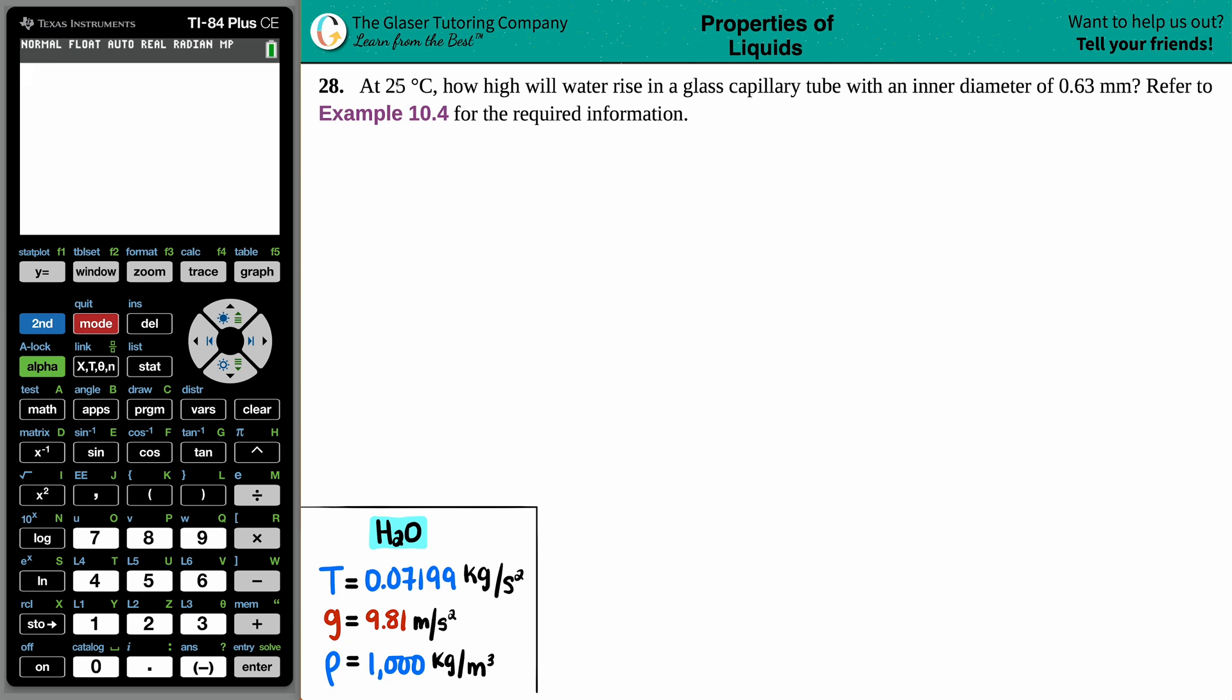Number 28: At 25 degrees Celsius, how high will the water rise in a glass capillary tube with an inner diameter of 0.63 millimeters? Refer to example 10.4 for the required information. We don't have to refer to that example, right? We got all the information right here, which I listed down at the bottom here.